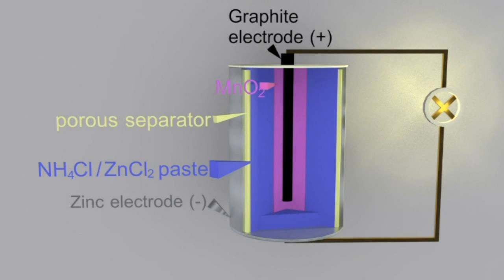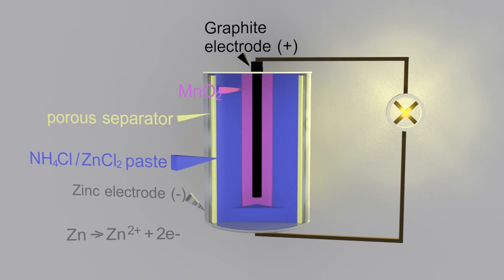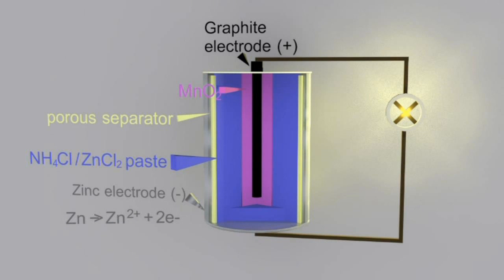So zinc turns to Zn²⁺ ions and two electrons, and so electrons are released at the zinc electrode. They go through the circuit to do work, maybe through a bulb...